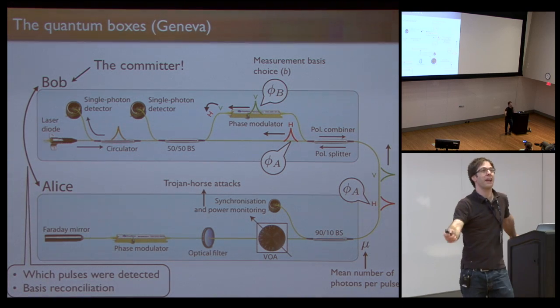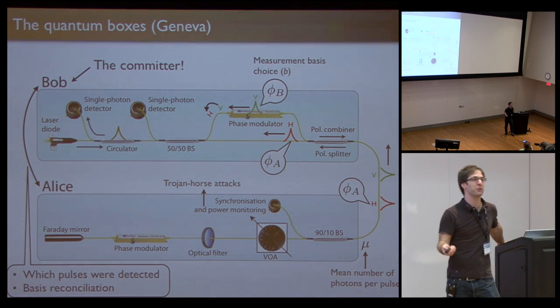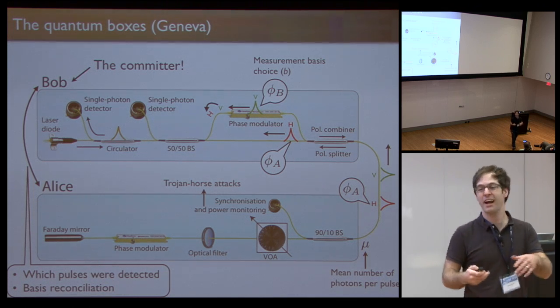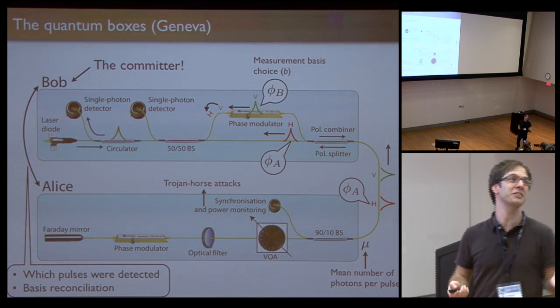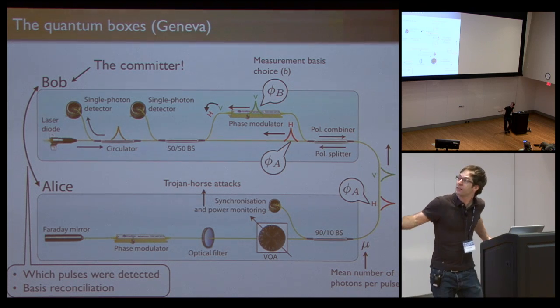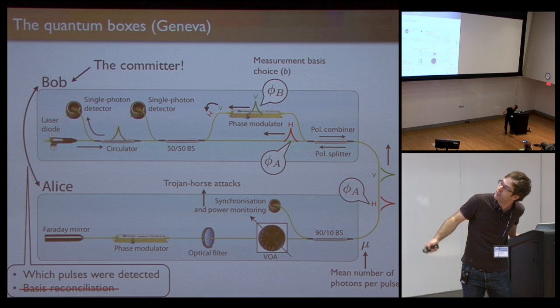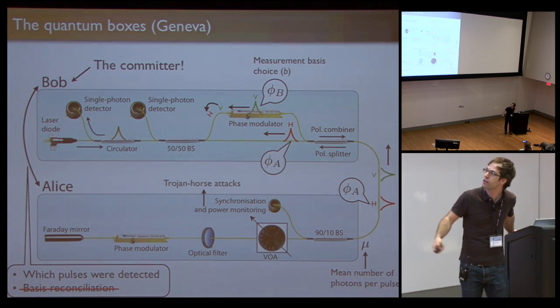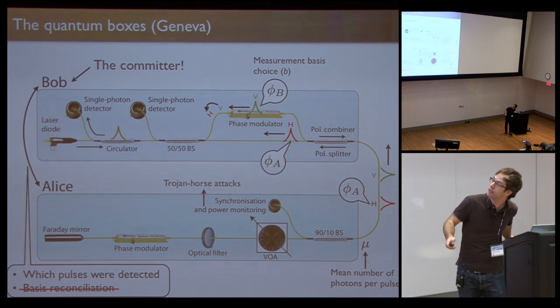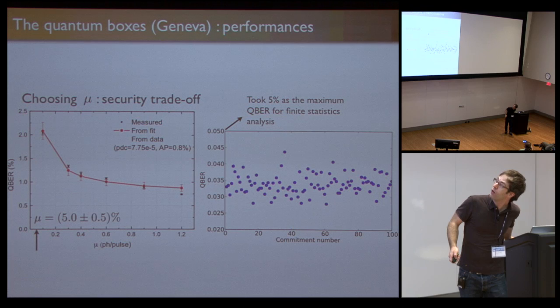The one thing that you certainly have to get rid of when you want to do a bit commitment is the basis reconciliation. You don't want Alice and Bob saying, 'I prepared in that basis. What about you?' The only thing that needs to be eliminated is that, and you keep only the back reporting, which pulses were actually detected. That's very important to do that in advance. Otherwise, there's an easy cheating strategy that you can do.